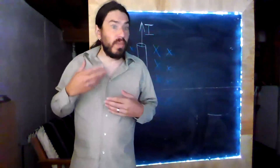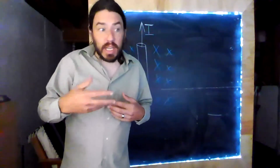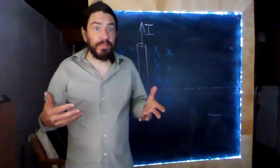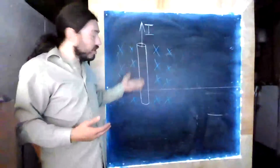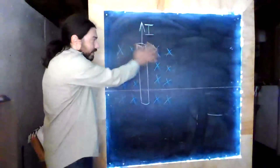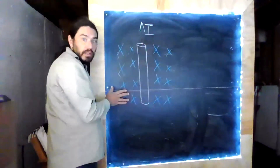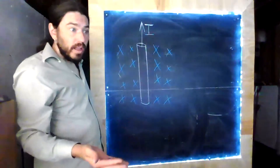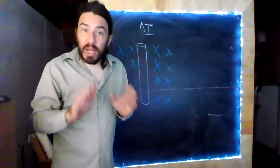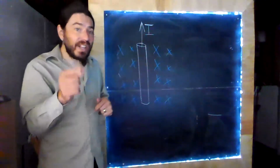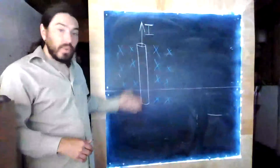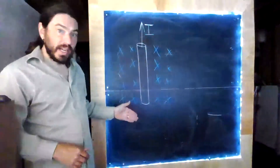If a moving electron or a moving proton in a magnetic field experiences a force, then if those charges are constrained to a wire and they are in a magnetic field, they ought to experience a force as well. Remember that current is defined as the flow of positive charges. So we actually already have the tools to determine what the force on this wire is.